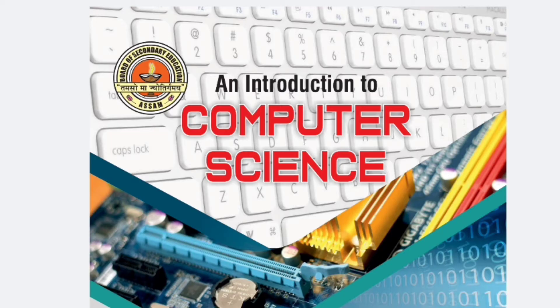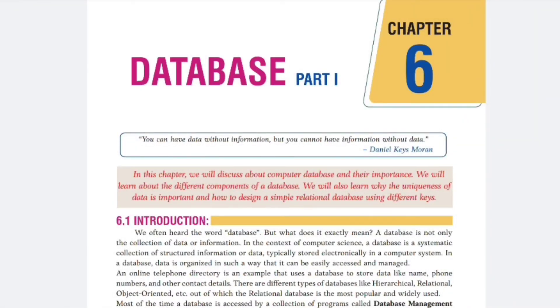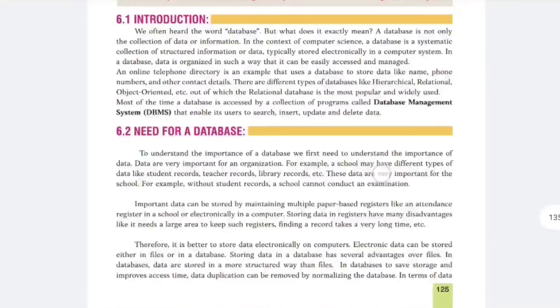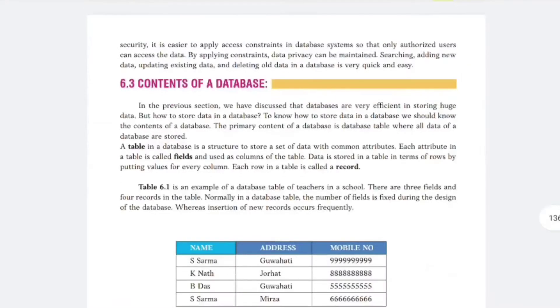First, let's look at Chapter 6, which covers the database part. From Chapter 6, mainly questions will come about: what is a database, what is DBMS, the full form of DBMS, examples of DBMS, what is a record, what is a field, and the difference between a flat database and a relational database.